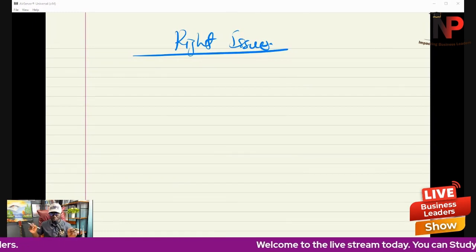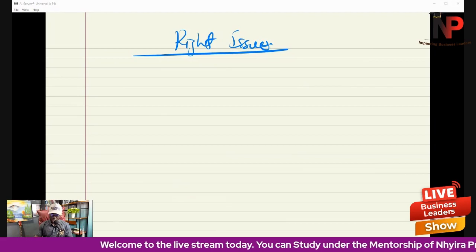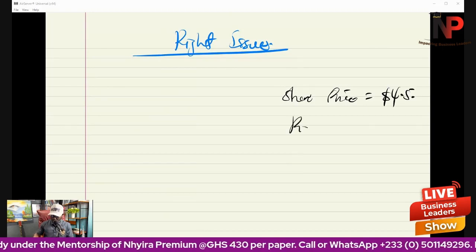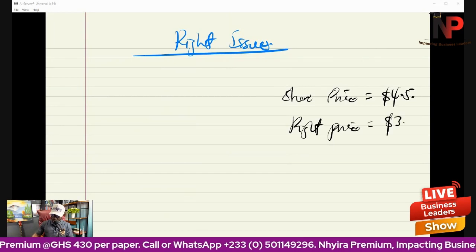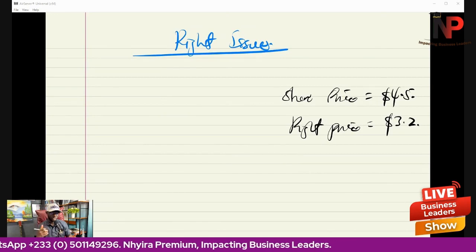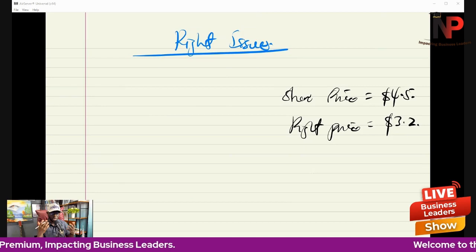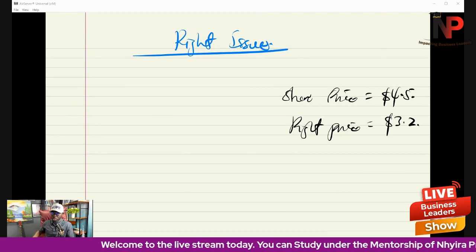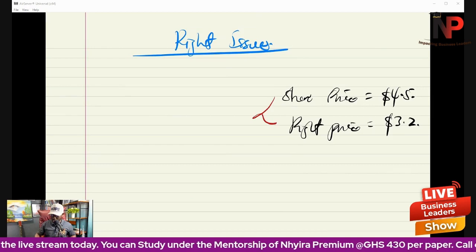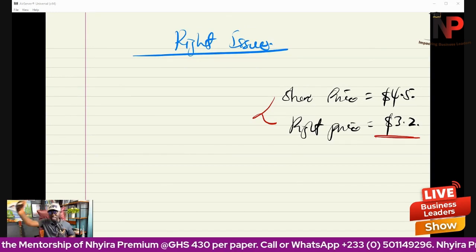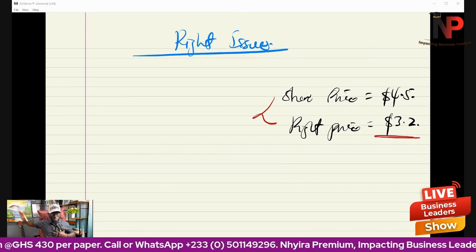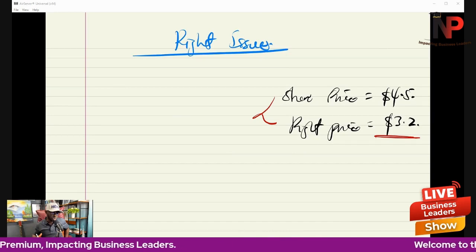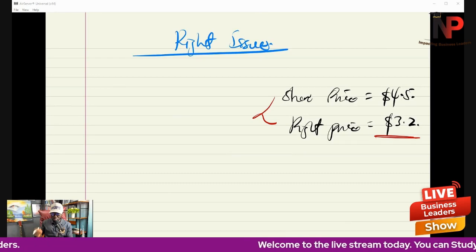We are issuing new shares to existing shareholders, but it will be below the current market value. For instance, if the current share price is $4.50, we are going to give them a right price of probably something like $3.20. The existing shareholders will be able to buy more shares based on their current ownership, and they buy those shares at a lower price. So you realize there is a bonus element coming in here — when they buy at $3.20, they can sell at the prevailing market price of $4.50, making some profit. In the right issue, there is a bonus element, and that bonus element must be dealt with when calculating the earnings per share.